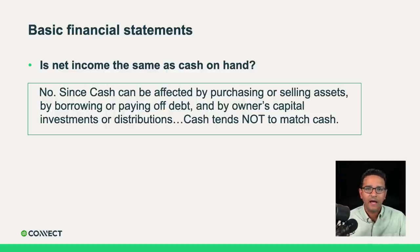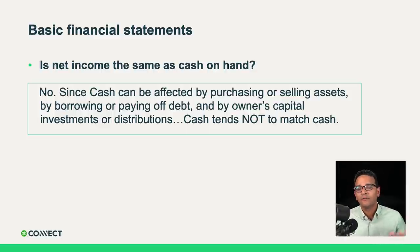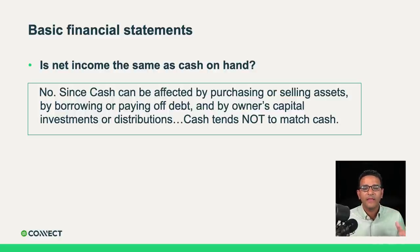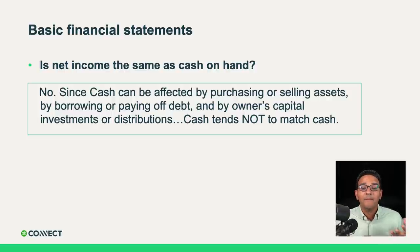A big question we get as accountants for small business owners is: why does my net income not match the cash on hand? The answer is no, they are not the same. Cash can be affected by activities that don't affect profitability or net income. For example, purchasing an asset, borrowing money from the bank, paying off debt, taking in capital from the owner, or giving the owner a distribution — all these are balance sheet transactions. They don't affect your profit and loss or net income. Therefore, your net income will probably not match your cash.